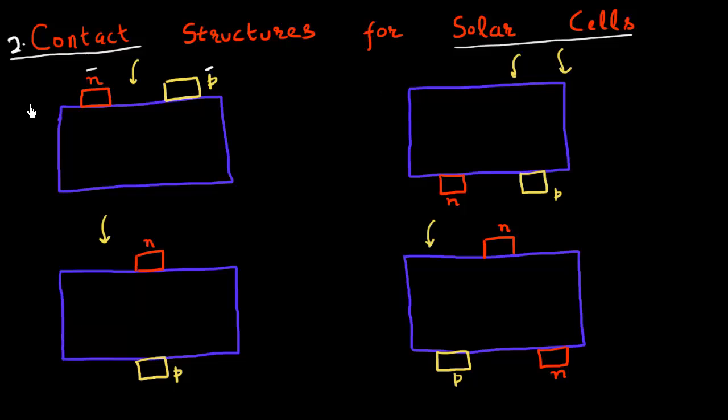In this case over here, both these contacts are facing the incoming light. So both of them will cause shading below this contact metallization. This scheme would obviously have a lot of shading and is typically not used.